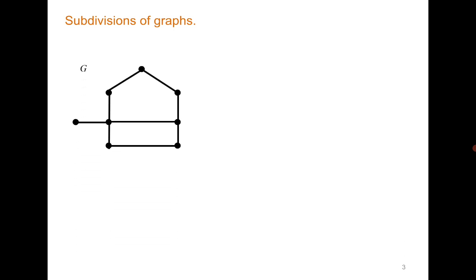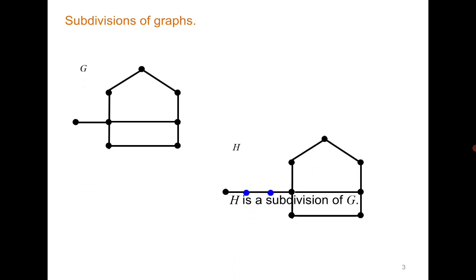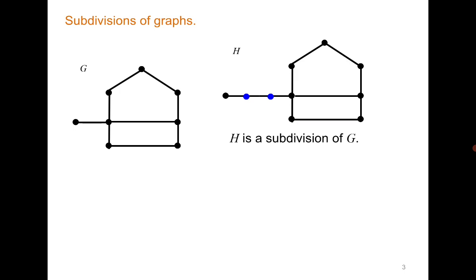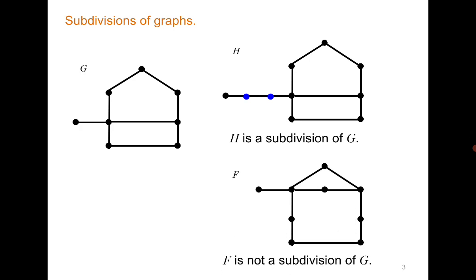Let's see some examples. If this is graph G, then clearly H is a subdivision of G because one of the edges of G has been subdivided by introducing two degree-2 vertices. But F is not a subdivision of G because this edge is not present in G.